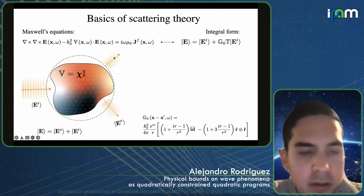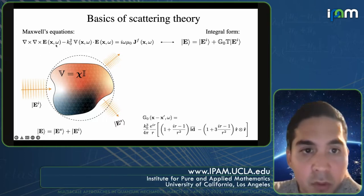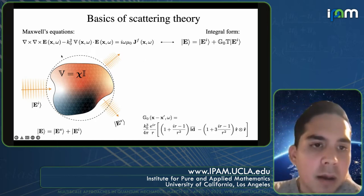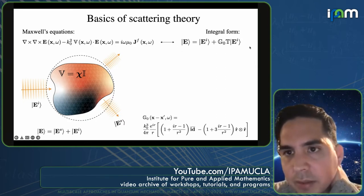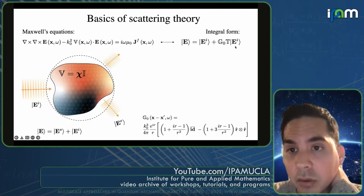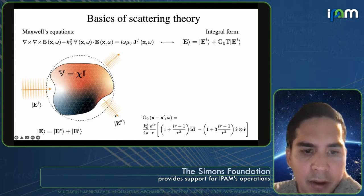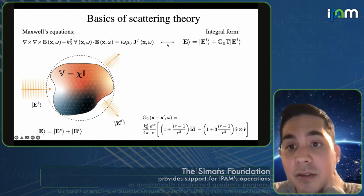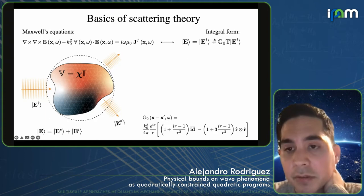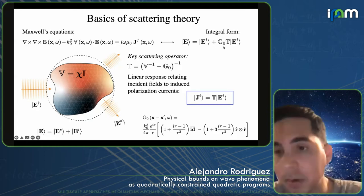Just to remind you of the basic scattering physics: Maxwell's equations in differential form. For scattering physics, it's much easier to write them in integral form. The typical scattering problem is you have an incident field, some scattering potential, and you want to find the scattered field, or the total field which is the sum of the incident and scattered field. In integral form, the total field is the incident field plus the scattered field given by the action of a scattering operator.